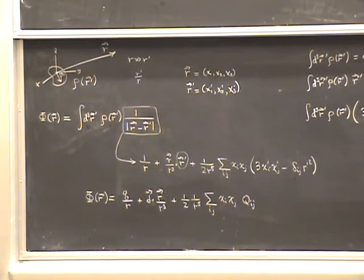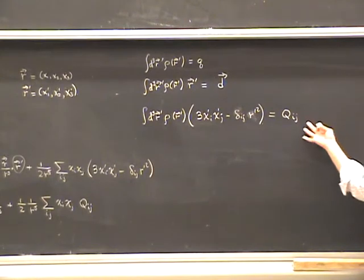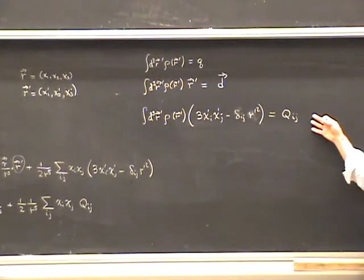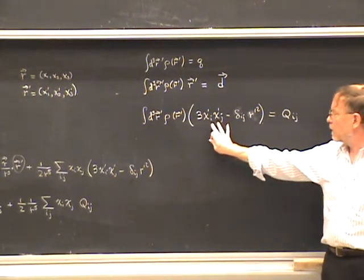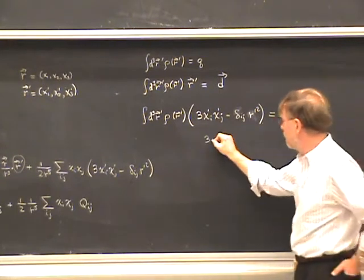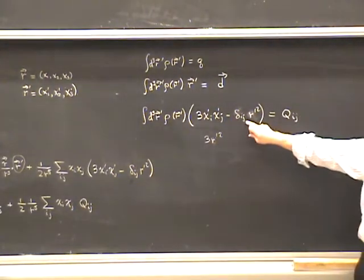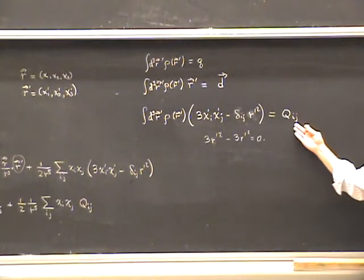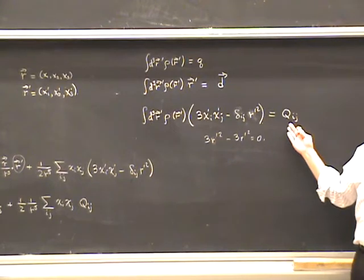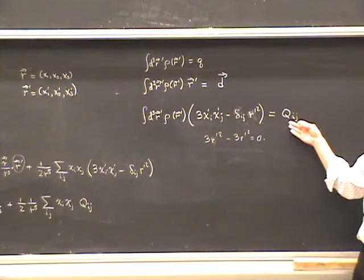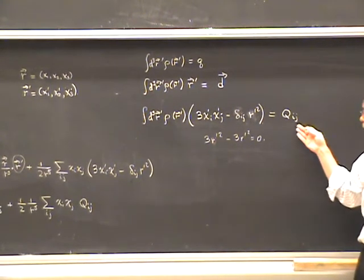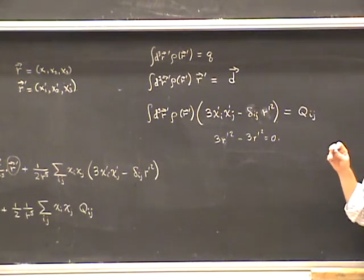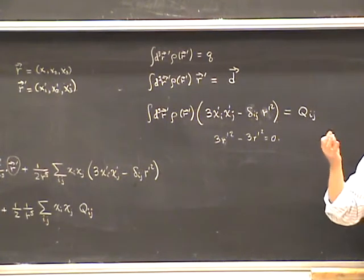The tensor Q_ij is obviously symmetric. It's also traceless — this comes from doing the Taylor series expansion of the Coulomb denominator, not by accident. Tracelessness means summing i equals j gives zero: the 3r'^2 from the first term cancels with -3r'^2 from the second term. So Q_ij is a symmetric and traceless tensor. As explained earlier, that corresponds to K=2 — there are five independent components in a symmetric traceless tensor, which can be put into the form of a Q value running from -2 to +2.